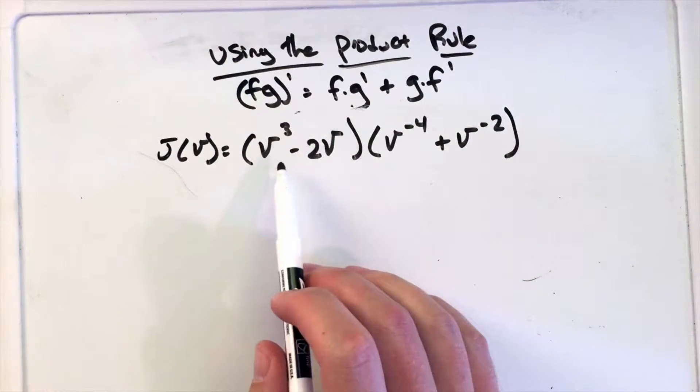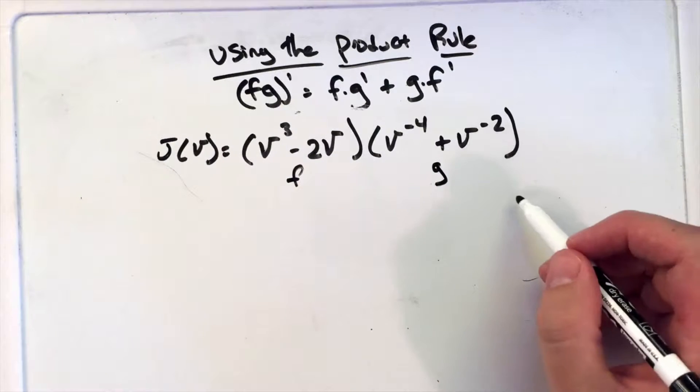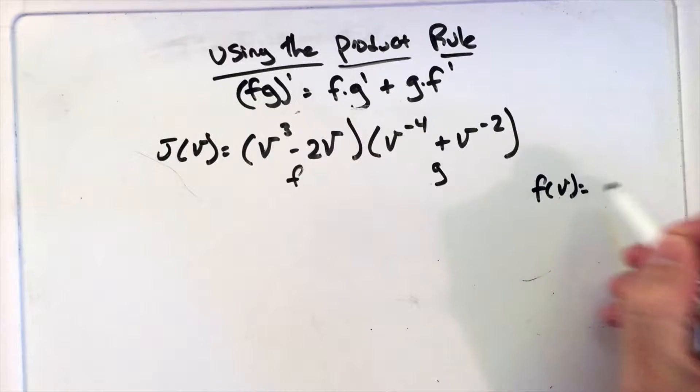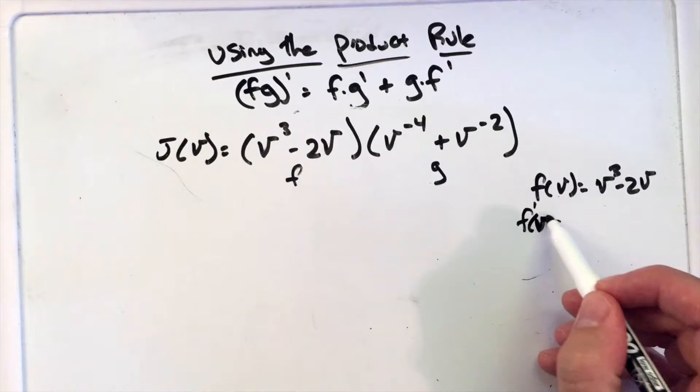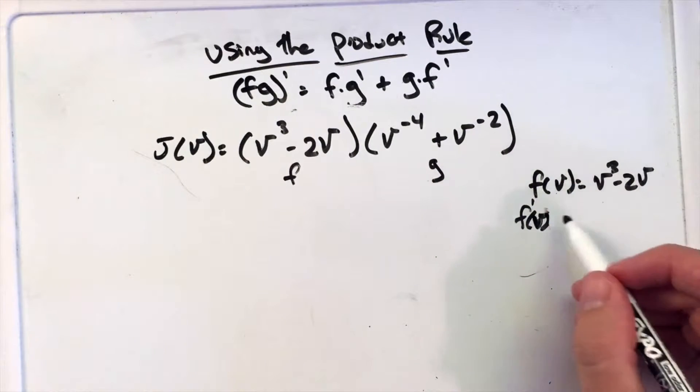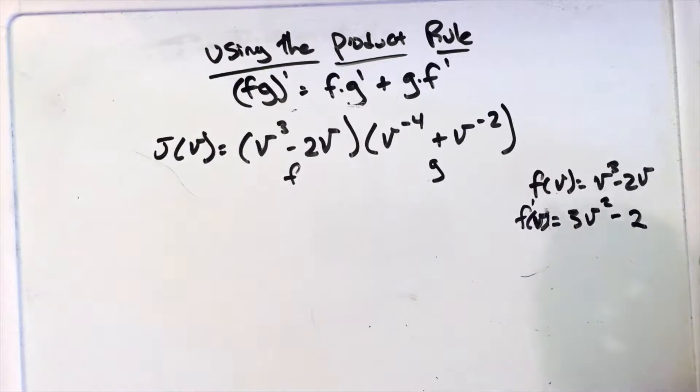I have my two parts here, two things multiplied, and I'm going to call this my f and this my g. If f(v) equals v³ - 2v, then f'(v) is 3v² - 2, using the power rule.